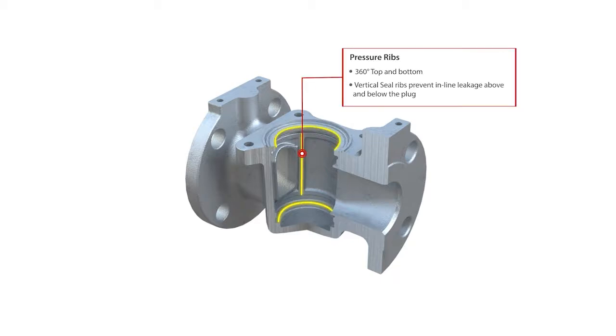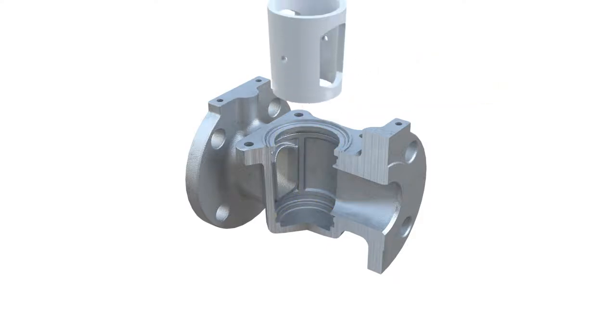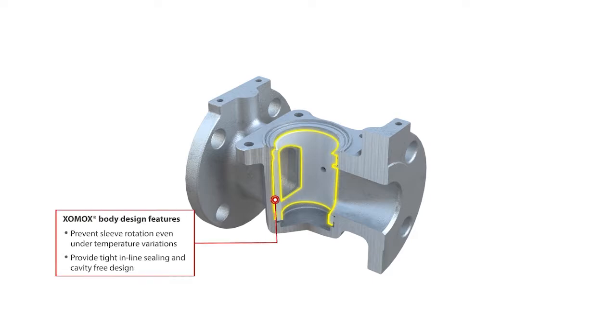Horizontal and vertical ribs in the body enable strong sealing capabilities between the sleeve and the plug creating compression that is needed to maintain the sleeve in place. These combined with the 360 degree ribs, top and bottom, lock the sleeve in a specific position.